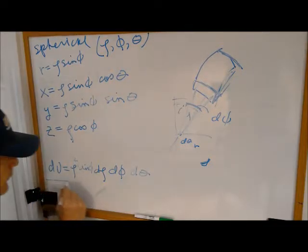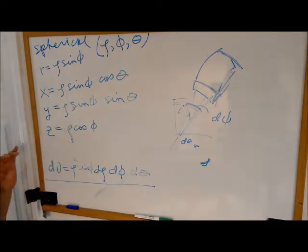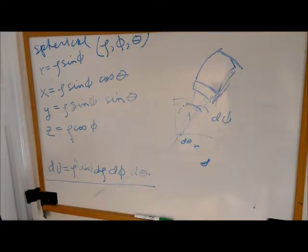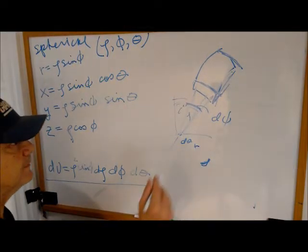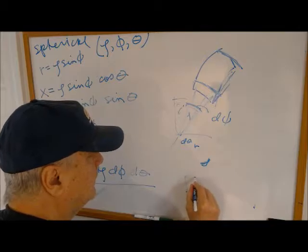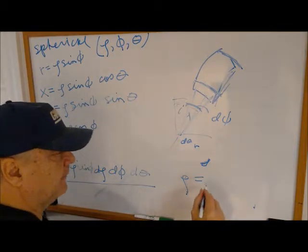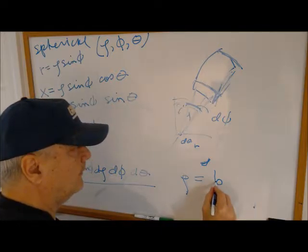Again, we're going to prove this using what's called Jacobian in the next lecture. So why is it called spherical coordinate system? Well, if you simply said rho is equal to some number, we used A, last time we used B. Well, what does that mean? It means the distance from the origin is a constant. It's B.